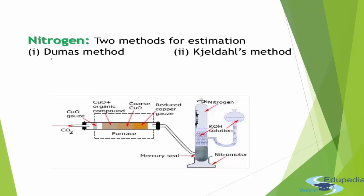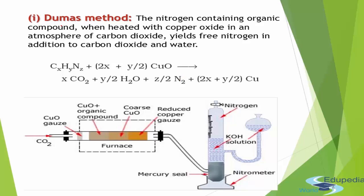Next, let's estimate nitrogen. There are two methods: the Dumas method and Kjeldahl's method. In the Dumas method, we take the organic compound containing nitrogen and heat it in the presence of copper oxide in an atmosphere of carbon dioxide. This yields free nitrogen, carbon dioxide, and water. We pass the gas through concentrated potassium hydroxide solution so that carbon dioxide and water are absorbed, leaving only nitrogen.